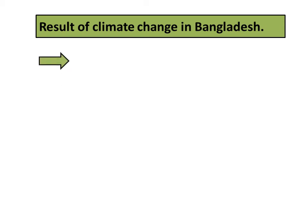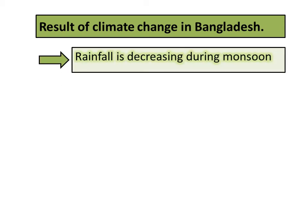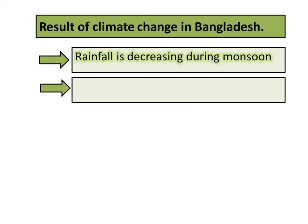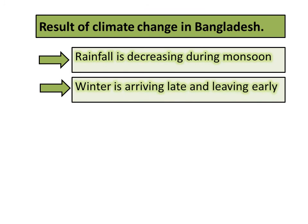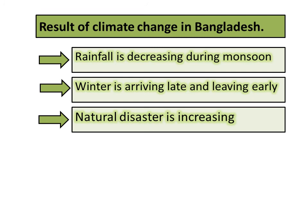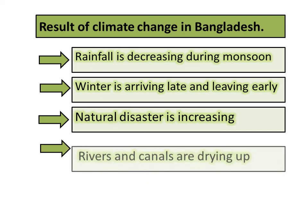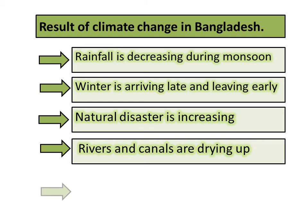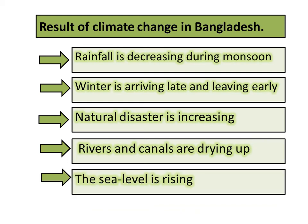Now, the results of climate change in Bangladesh. Due to climate change, rainfall is decreasing during monsoon. Winter is arriving late and leaving early. Natural disasters are increasing. Rivers and canals are drying up. The sea level is rising. How is the sea level rising? Due to global warming, ice is melting, and because of that, the sea level is rising.